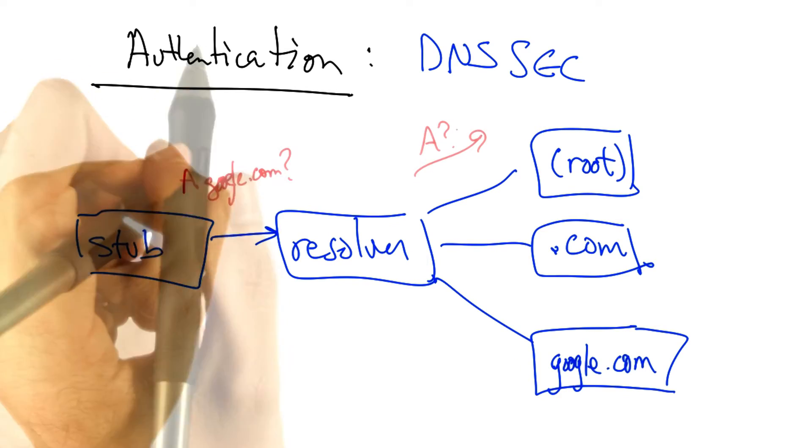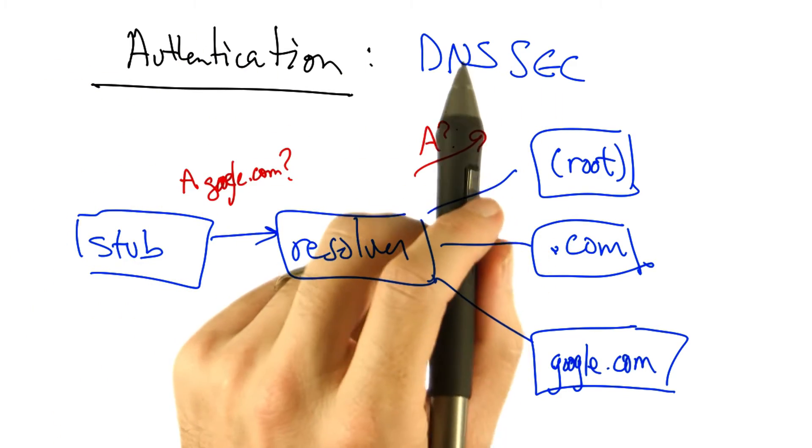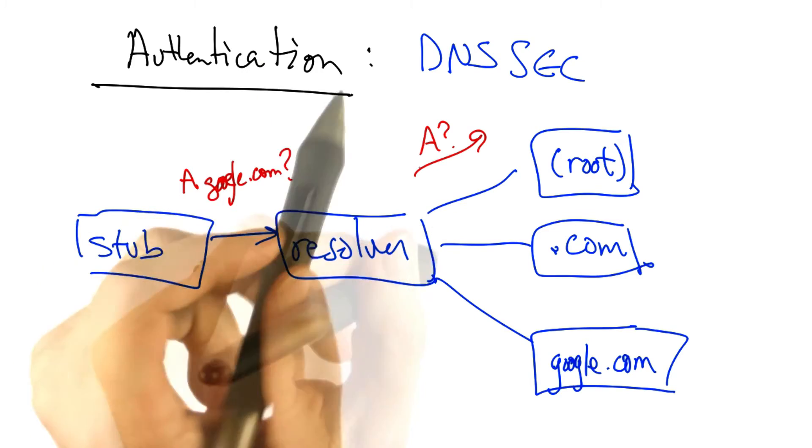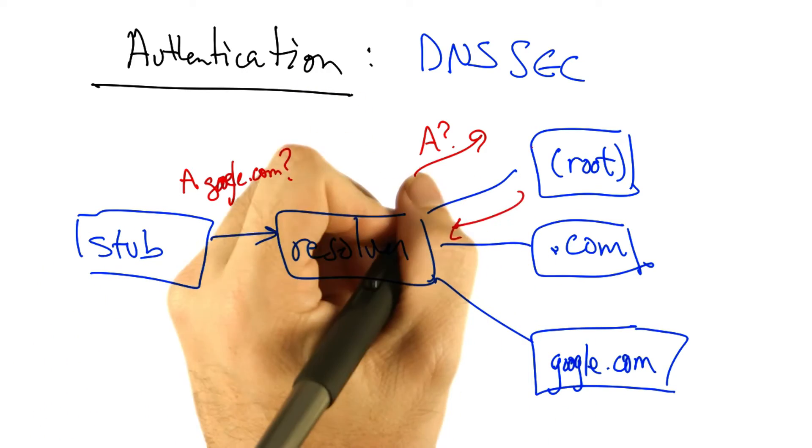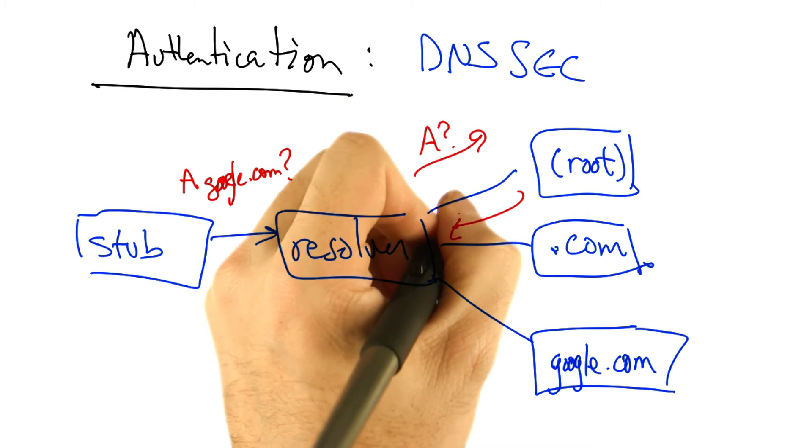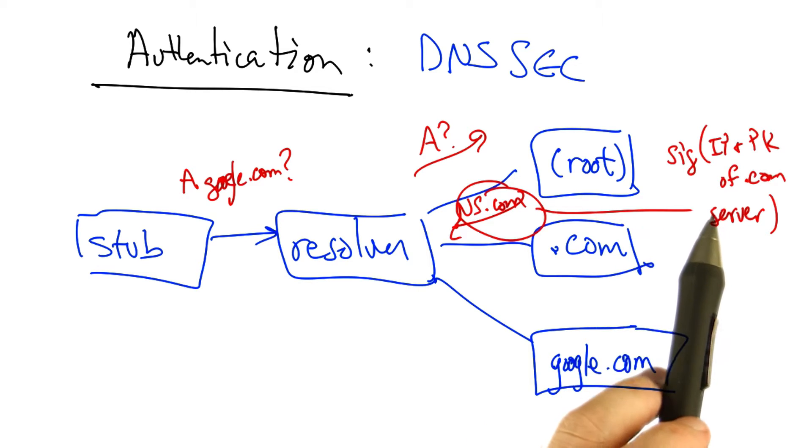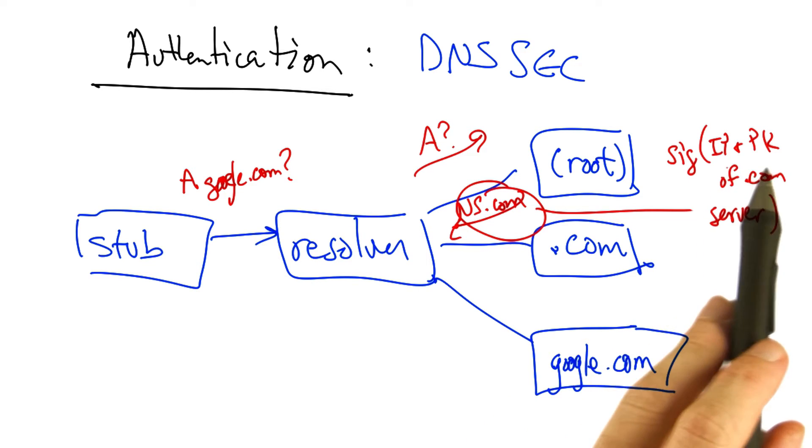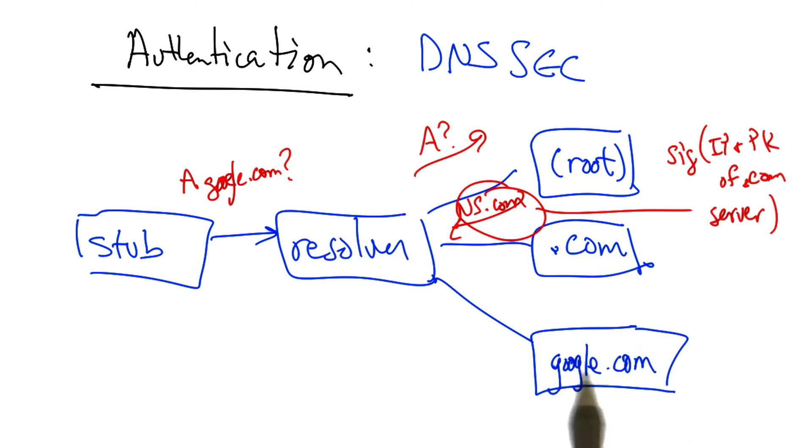When a stub resolver issues a query, assuming there is no caching, the query is relayed by the recursive resolver to the root name server, which, as we know, sends a referral to .com. But this referral includes the signature by the root of the IP address and the public key of the .com server.